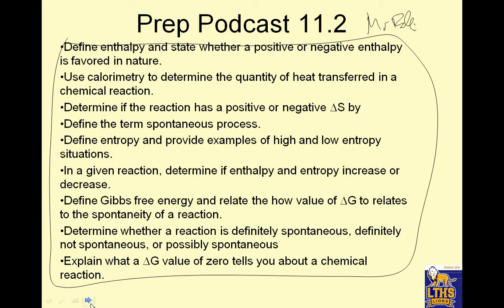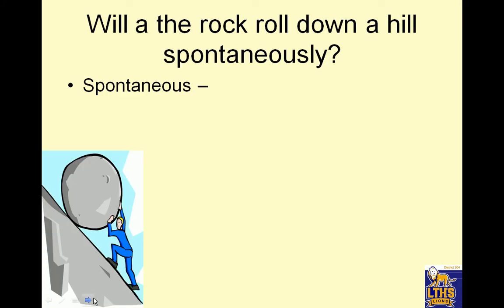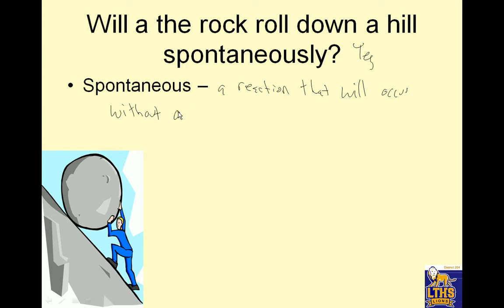Let's hop right into it. Will a rock roll down a hill spontaneously? The answer is yes. What does spontaneous mean? It means a reaction that will occur without outside help. Right now, this guy is keeping it from falling. If the guy was gone, it would spontaneously roll down the hill. Non-spontaneous means it will not. Will a rock spontaneously roll up a hill? No. But it will roll down a hill spontaneously.